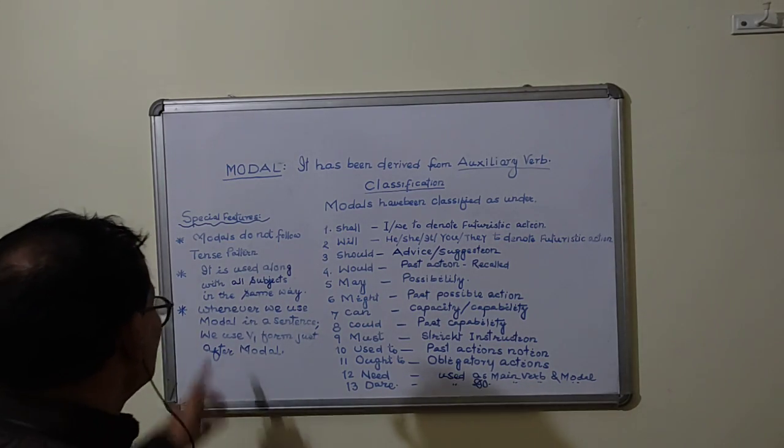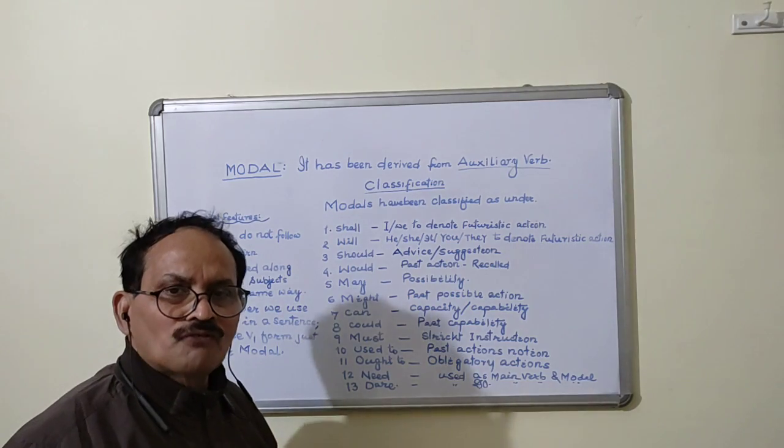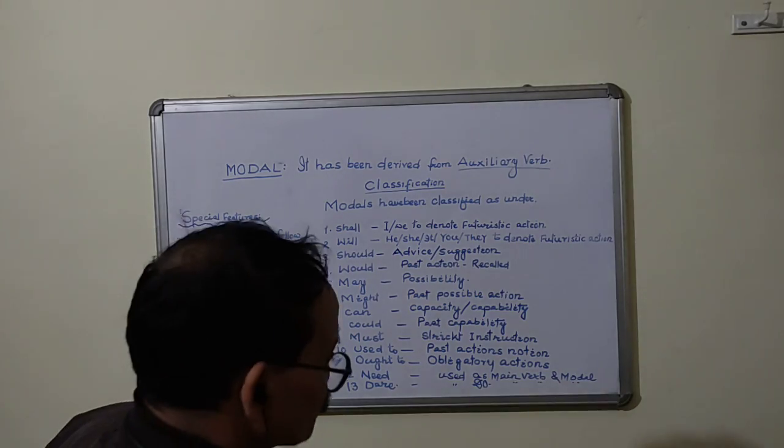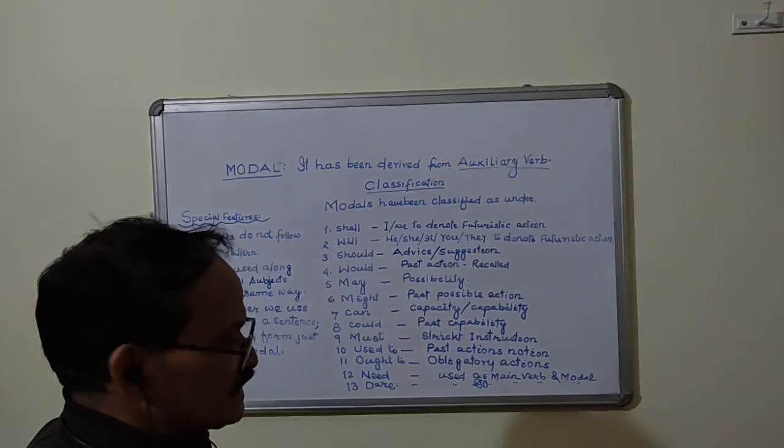Number three, whenever we use model in a sentence, we use v1 form, that is base form of verb is used along with the model when it is used in sentences.